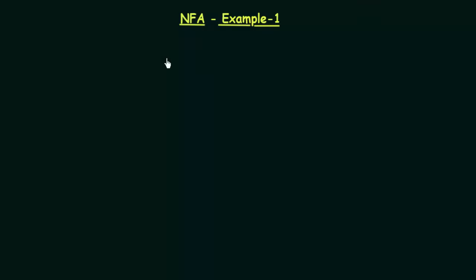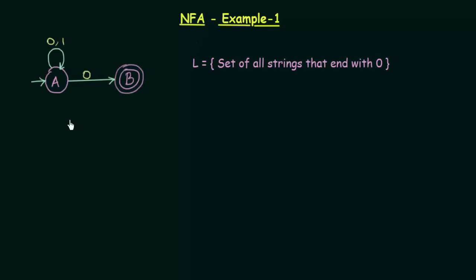Hello everyone! Welcome to the next lecture in Theory of Computation. In this lecture we will be seeing an example about NFA and see how it behaves. So here we have an example — this is the same example we saw in the last lecture. This is an NFA that accepts the set of all strings that end with 0. Let us pass some strings to this as input and see how it behaves.